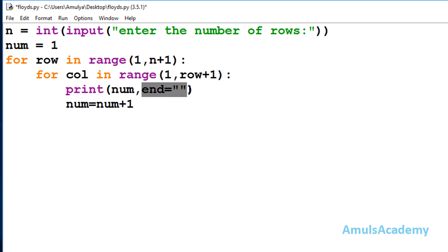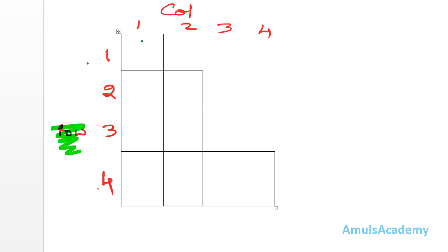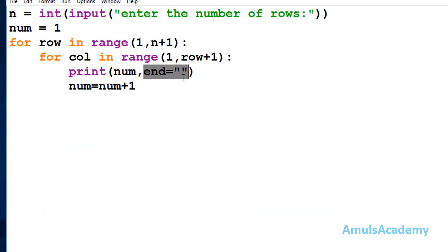By default the end value in the print function is '\n', meaning after printing a number control goes to the next line. If I didn't use end, numbers would print in a single column, which I don't want. By changing the end value to an empty string, numbers print consecutively on the same line — so after 1 it prints 2, 3, 4, and so on, each number immediately following the previous without a newline.